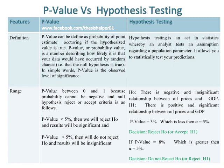Hypothesis testing is an act in statistics whereby an analyst tests an assumption regarding a population parameter. It allows you to statistically test your predictions. The range of p-value is between 0 and 1, because probability cannot be negative, and the null hypothesis reject or accept criteria is as follows.